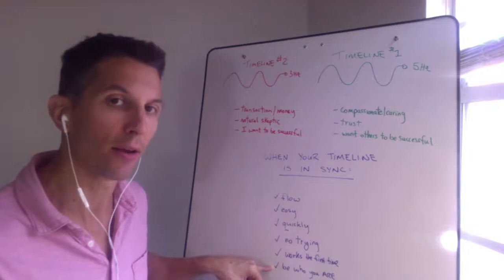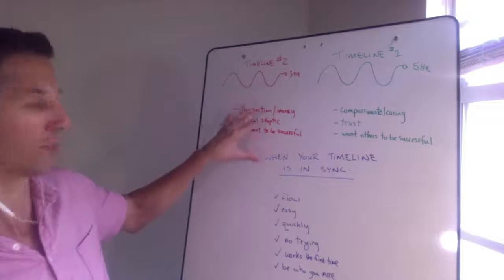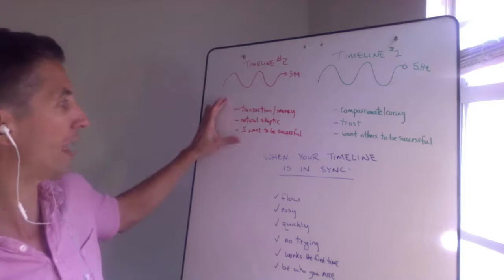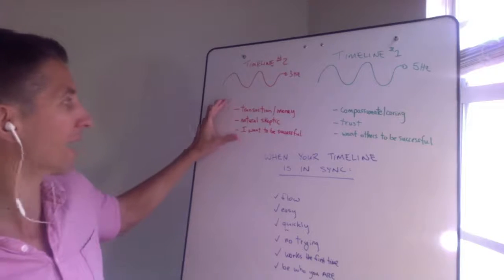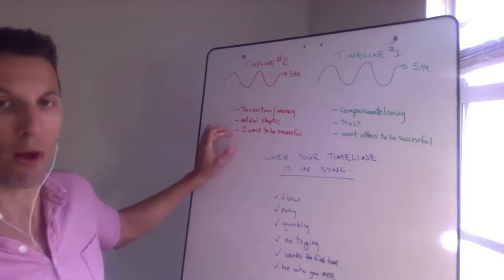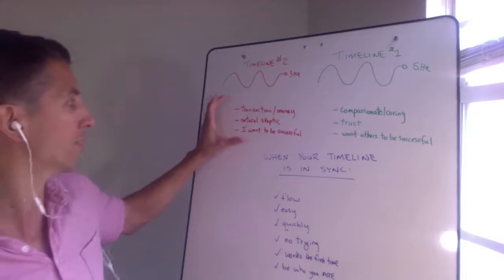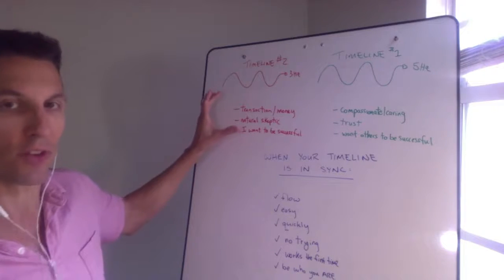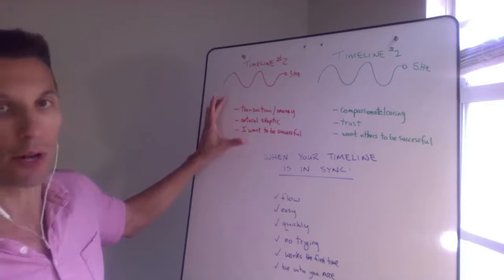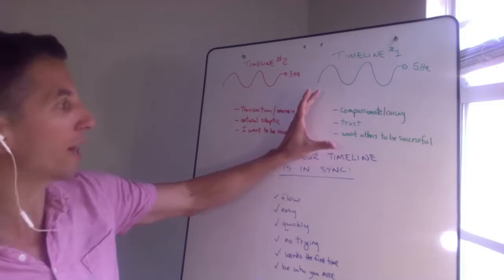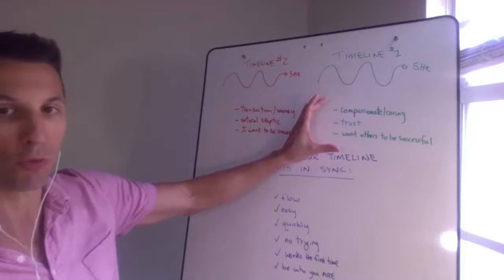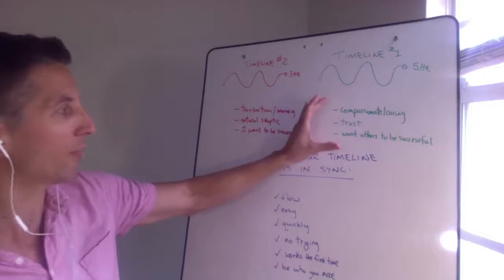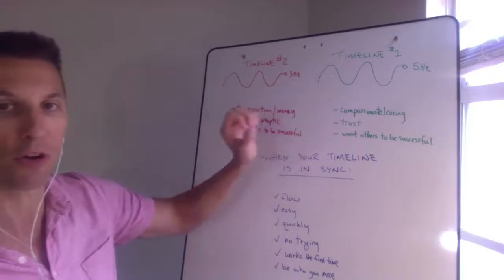It works the first time and I'm just being who I am and they're just being who they are. Now someone who's like this on this timeline, this is their natural state. Since this is their natural state to be transactional, a natural skeptic, and they want to be successful, those are the priorities of their state of being. They will work really well with the client that thinks and feels and has values that are in the same priority. For me I need someone like this, that's what I need. I need this in my relationships, my close relationships, my friends, but also with my clients.